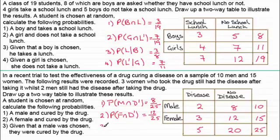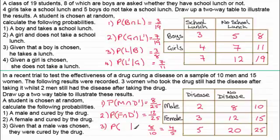Finally, in number three, given that a male was chosen, what's the probability they were cured by the drug? We know that's out of 10 males, and eight were cured, so that's eight out of 10. You might reduce that by cancelling by 2 top and bottom to give four-fifths. In set notation, that's the probability of D' given male — P(D' | Male) — which equals eight tenths, or four-fifths.